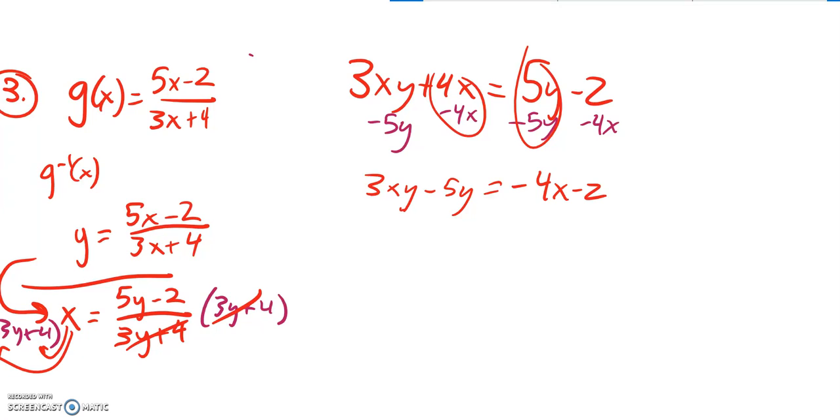And what's great about that is now that these both have a y in them, what I can do is I can factor that y out. So if I factor that y out, I'm taking it, dividing it out of both of those. So I'm left with 3x minus 5.